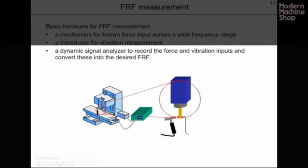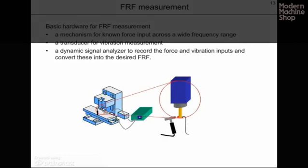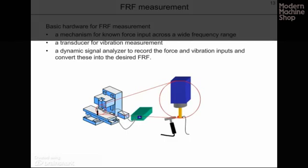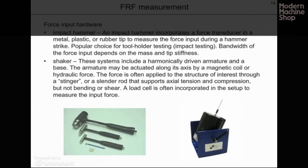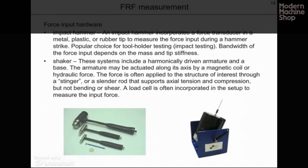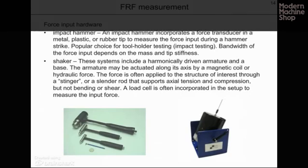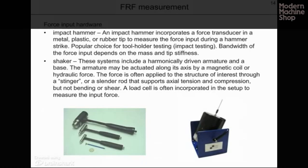Let's discuss the equipment necessary to perform a frequency response function measurement. First, we need a mechanism to input a known force across a wide frequency range. Second, we need a transducer to measure the vibration. And third, we require a dynamic signal analyzer that records the force and vibration inputs and converts these into the desired frequency response function. There are two main mechanisms for force input: the impact or modal hammer, where a force transducer in a metal, plastic, or rubber tip measures the force input during a light hammer strike — the most popular choice for tool-holder testing — and the shaker, where an armature is attached to the structure through a stinger, and motion of the armature imparts a force to the structure, with a load cell incorporated to measure the input force.